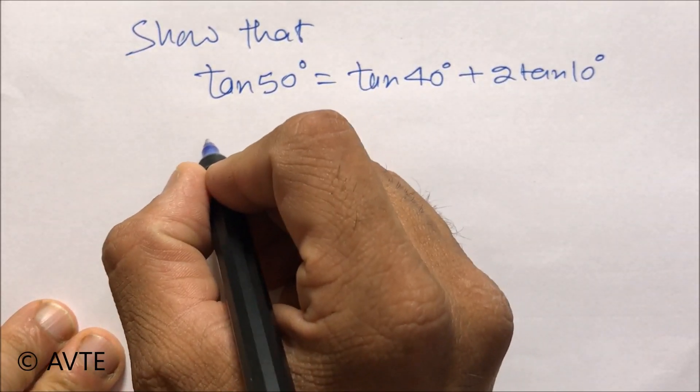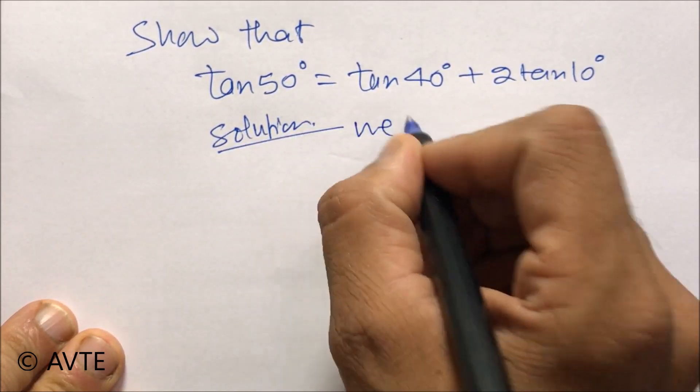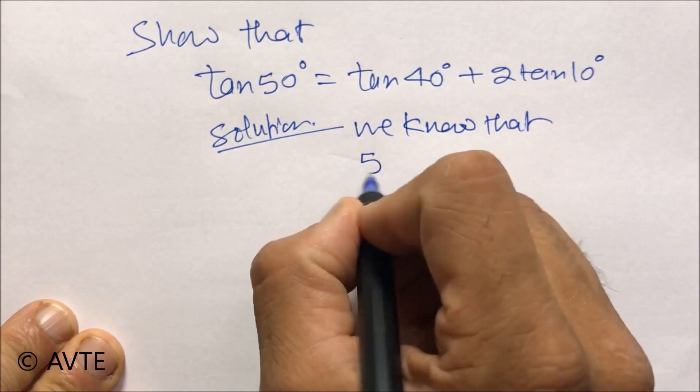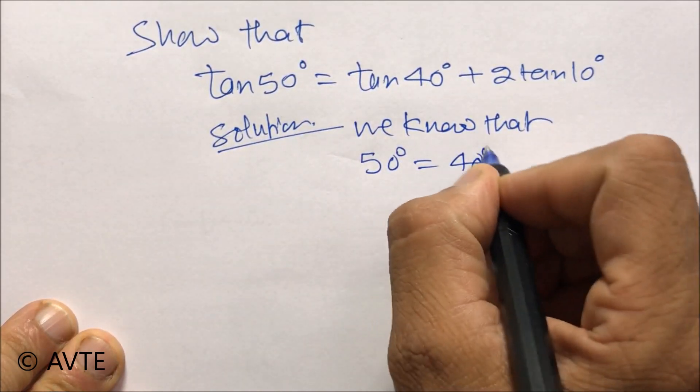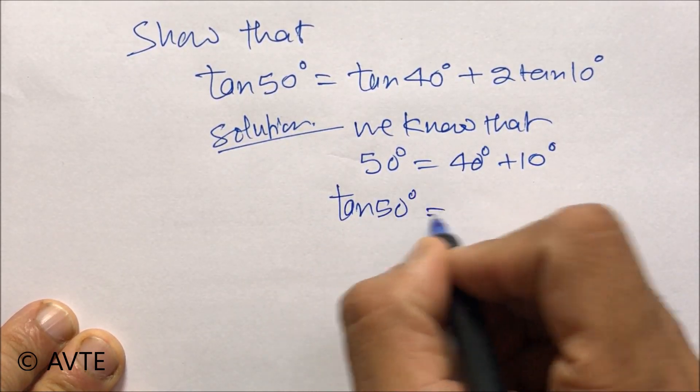So we can write that we know that 50 degrees equals 40 plus 10 degrees, and we take tan. If this is true then this is also true for tan.